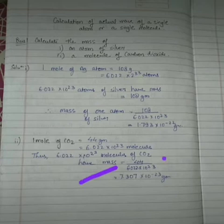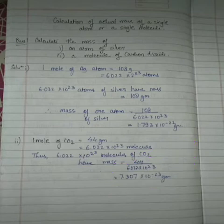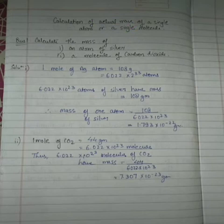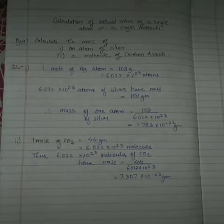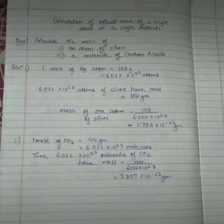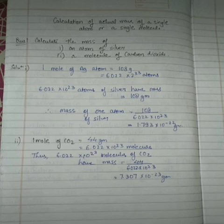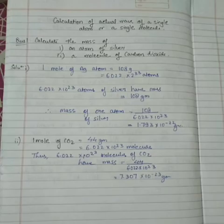So we can say 6.022 × 10²³ molecules of CO₂ have a certain mass. To calculate the mass of one molecule, we divide the molecular mass by Avogadro's number, and the answer is 7.307 × 10⁻²³ grams. This is all about calculating the actual mass of a single atom or single molecule. In our next lecture, Part 2, we will solve more questions on mole concept — including calculations about atoms, ions, and compounds.